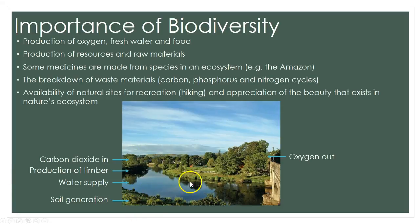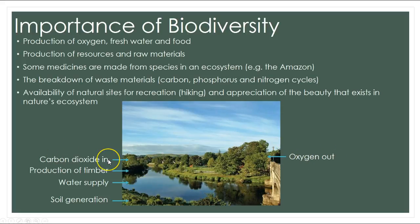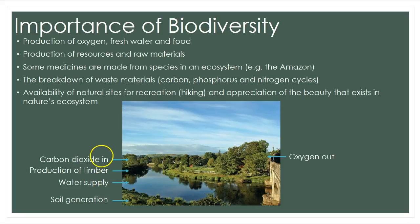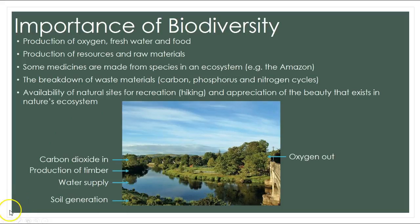In this ecosystem here we can see that we have oxygen production, we have carbon dioxide being taken in by photosynthesis, we have production of timber that we use for building supplies. We also have a fresh water supply and soil generation, which is really important for growing crops on.